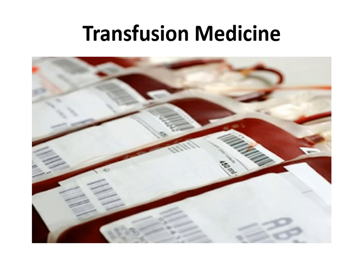On page 603, we have transfusion medicine codes 86850 through 86999. Transfusion medicine codes report tests performed on blood or blood products. Options here include screening blood for antibodies, autologous blood collection, processing, blood typing, compatibility testing, as well as preparation and treatments performed on blood and blood products.